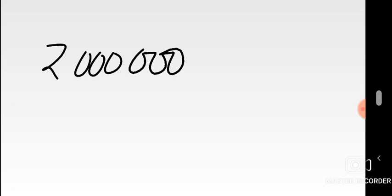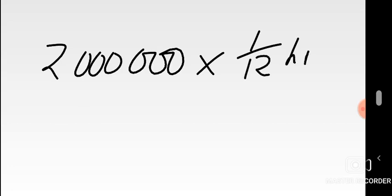To find the number of workers, first take note of the planned production — it's two million. You multiply this planned production by how long it takes to produce all two million units. They said it takes five minutes per unit. Since assembly time is in hours, we convert five minutes to hours, which is expressed as the fraction 1/12.